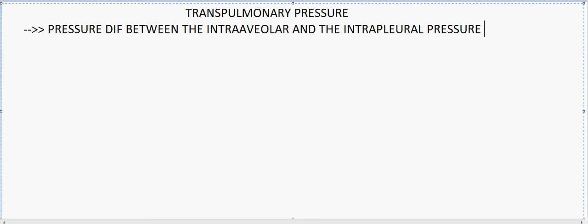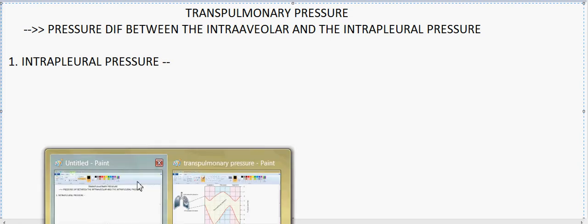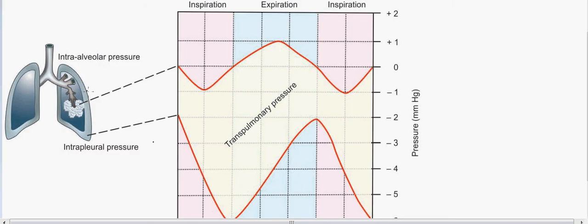In order to understand transpulmonary pressure deeply, we should know what intra-alveolar and intra-pleural pressure mean. The intra-pleural pressure is the pressure existing inside the pleural cavity, which just surrounds the lungs. We can see the lungs here, and the pleural cavity is just surrounding them.